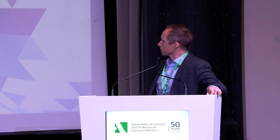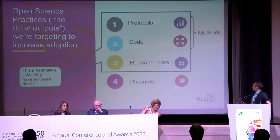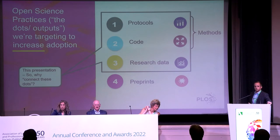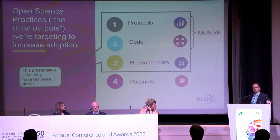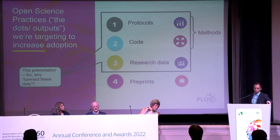Hello everyone. When we're talking about these dots — these outputs beyond the PDF — what I think we're actually talking about is open science practices. At PLOS, we've identified 14 different open science practices that our journals support. We're currently focused on four of these, trying to find ways to increase adoption. For this talk, because we've already heard a lot about preprints, I'm going to talk about three: protocols, code, and research data.